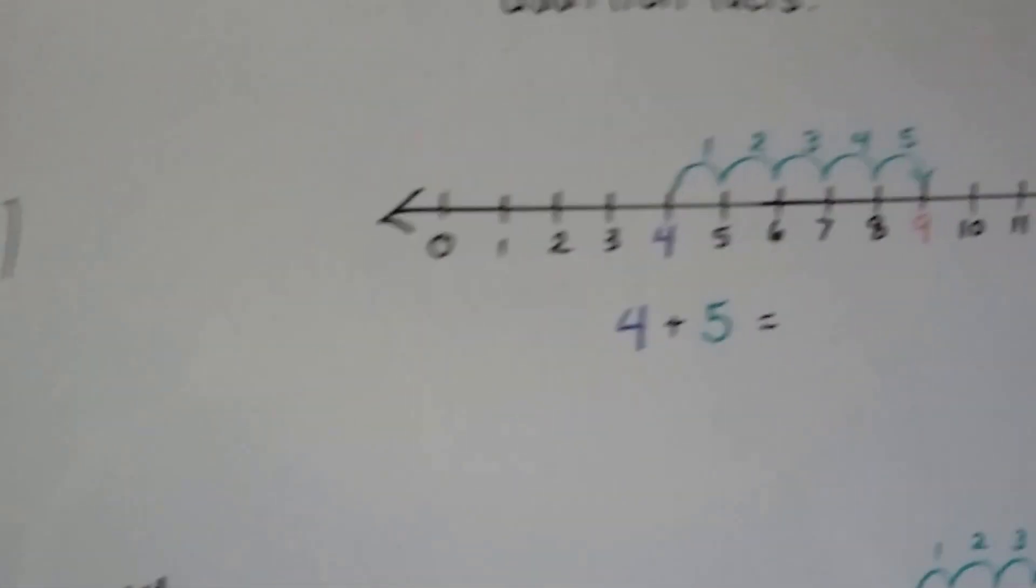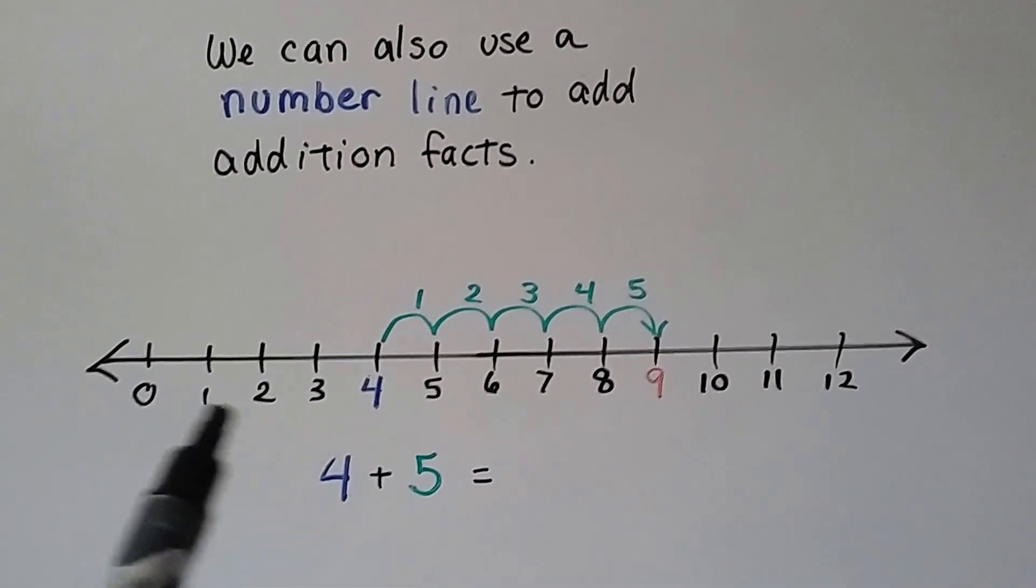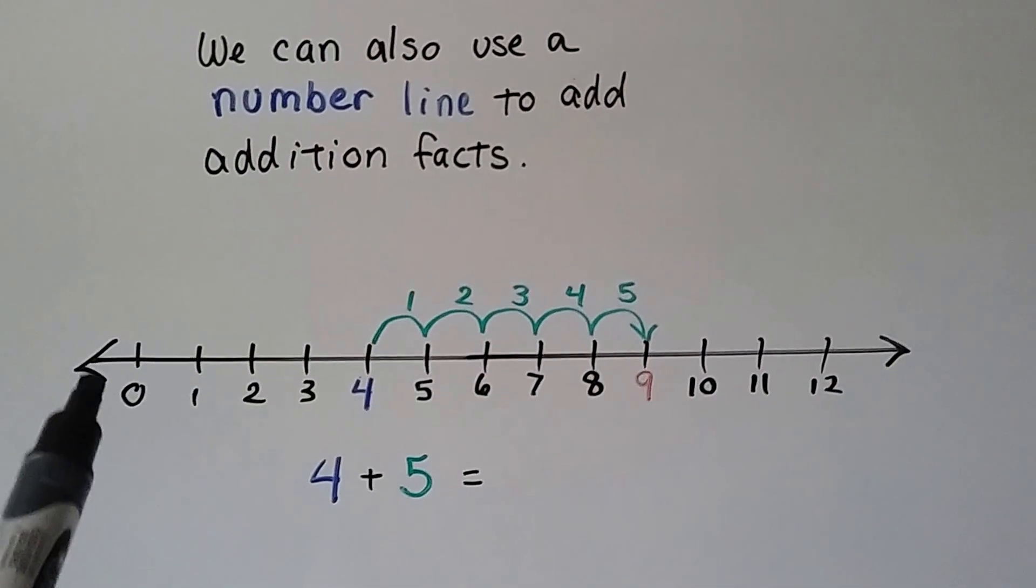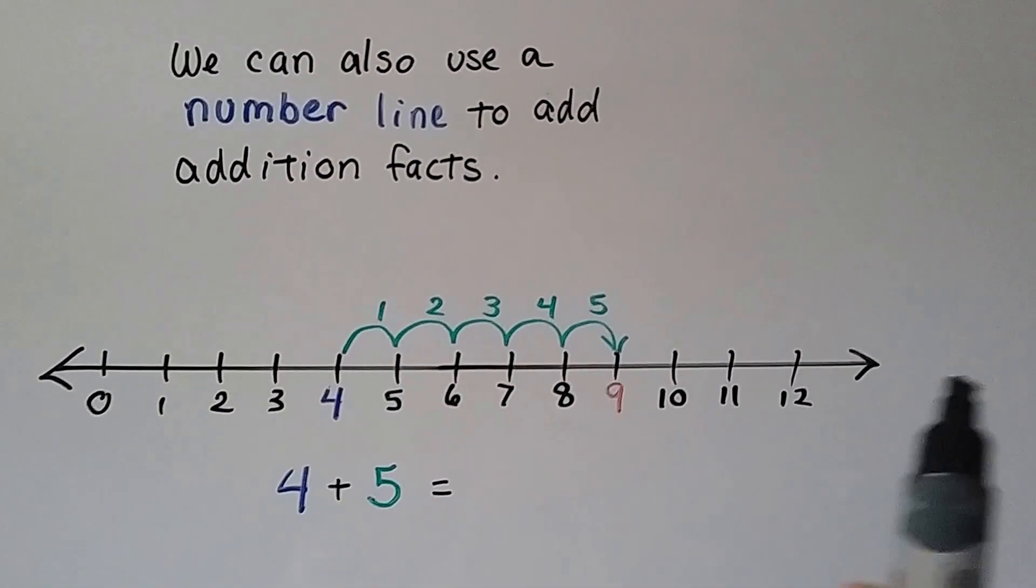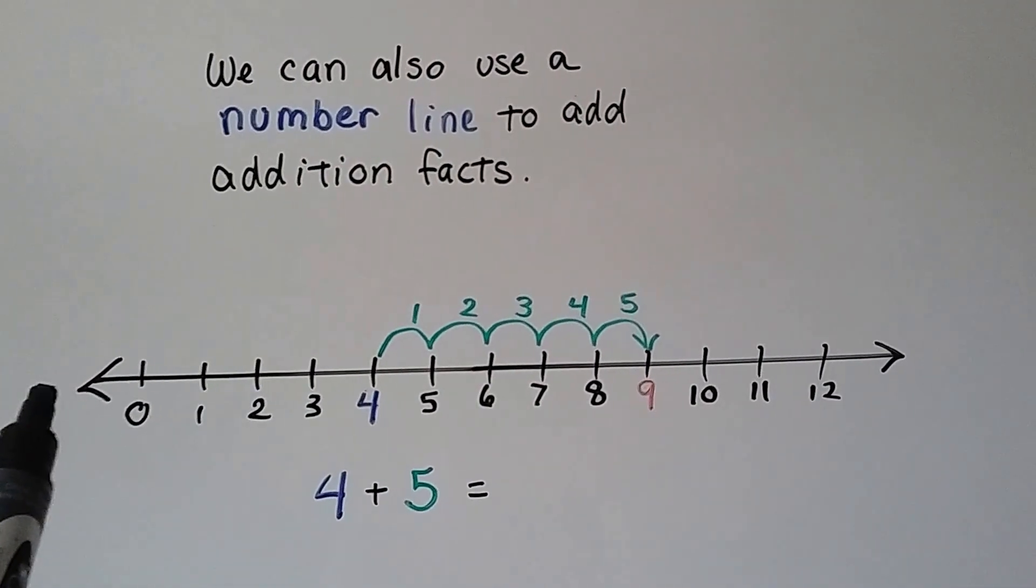We can also use a number line to add addition facts. If we have 4 plus 5, this is our addition, this is our number line right here. And see how it's got an arrow on this side and an arrow on that side? Well, that means that the numbers go on forever and ever in each direction into infinity.